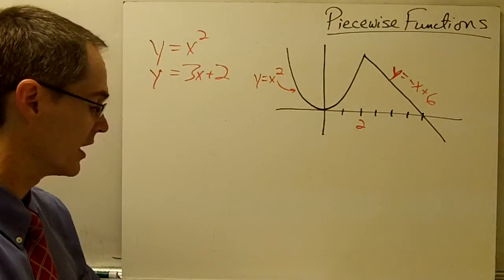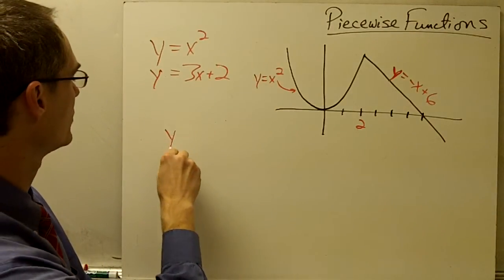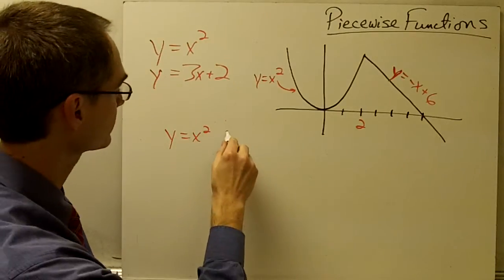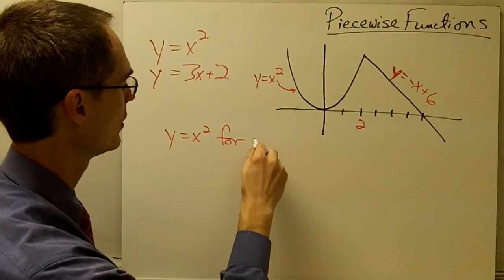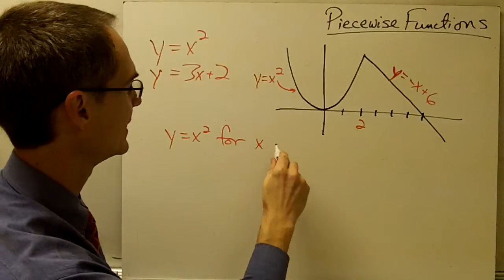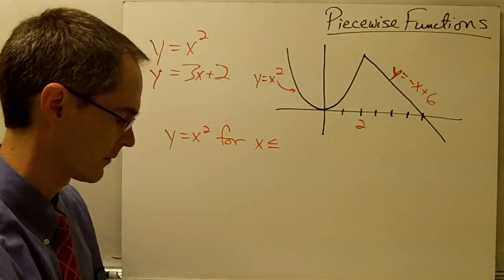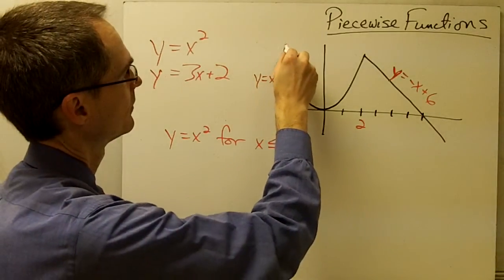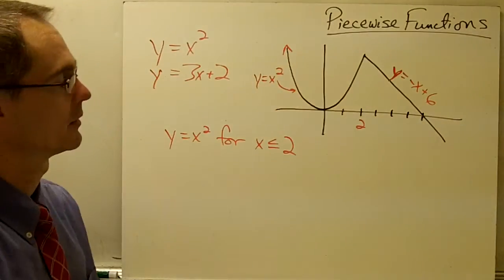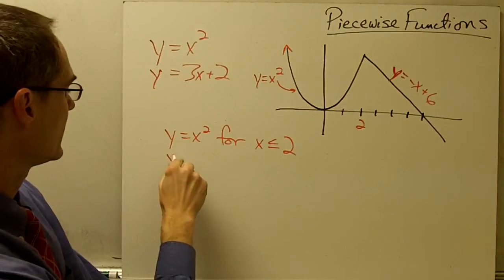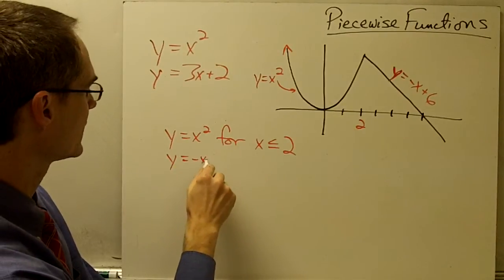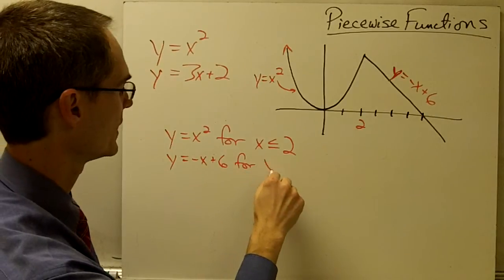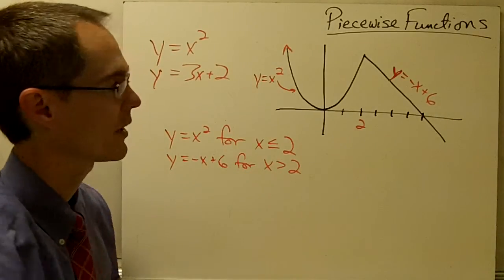That's called a piecewise function. We might say, for example, that this function is y equals x squared for x less than or equal to 2, and the function continues on in this direction. Yet y equals negative x plus 6 when x is greater than 2.